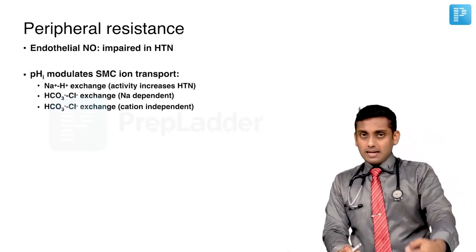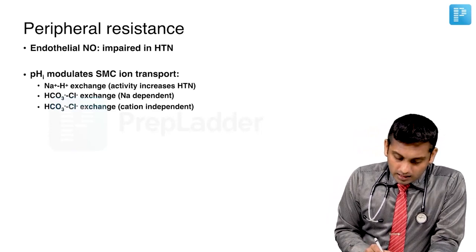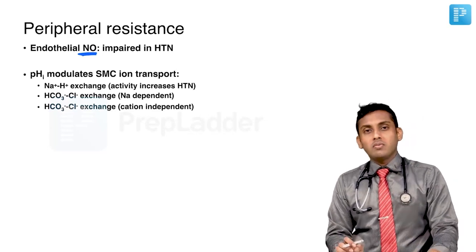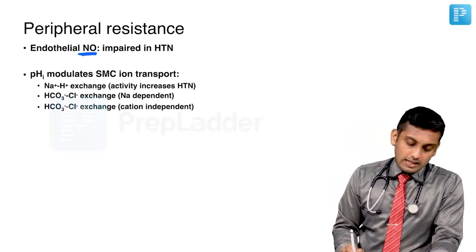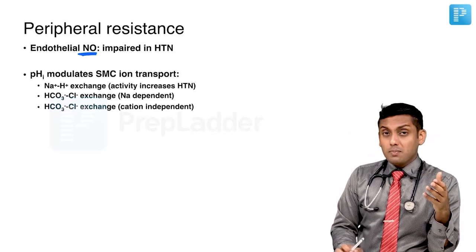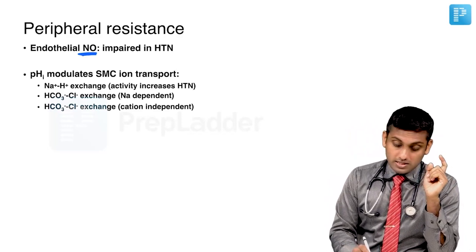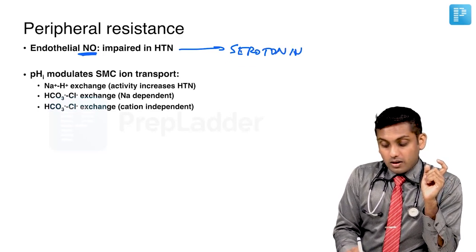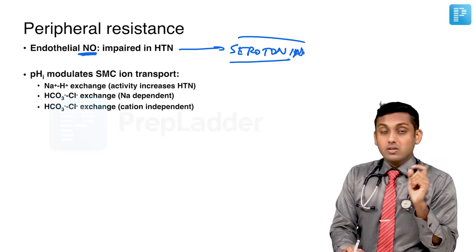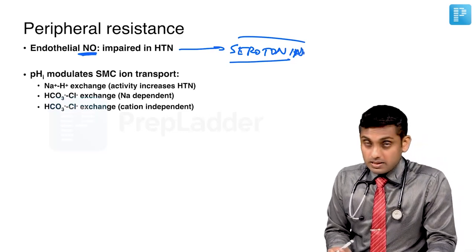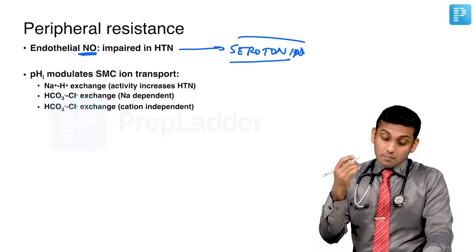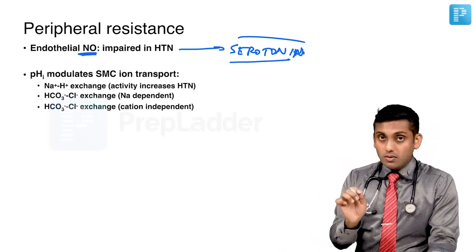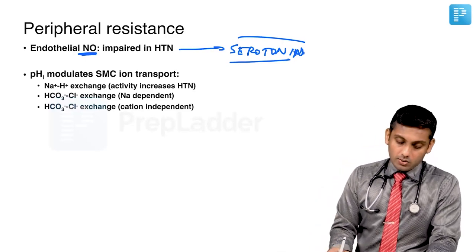Coming to what happens at the endothelial level: in hypertension, endothelial nitric oxide is impaired — also called endothelium-derived relaxation factor or EDRF. Serotonin is actually a vasodilator in perfectly normal healthy vessels, but in hypertension it acts as a vasoconstrictor because the endothelium is diseased. It is also a vasoconstrictor in coronary artery disease and in hypertension as well. Serotonin is a vasodilator only in absolutely normal healthy vessels and healthy endothelium.